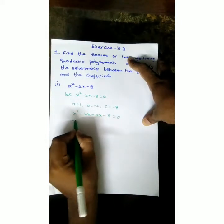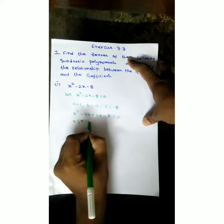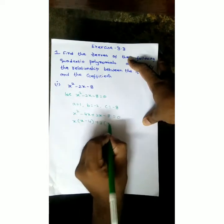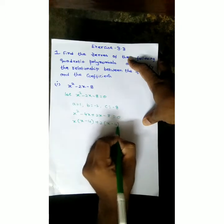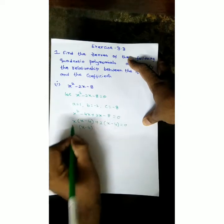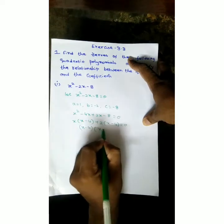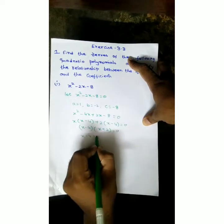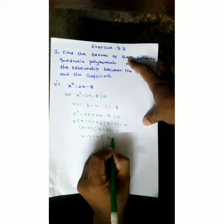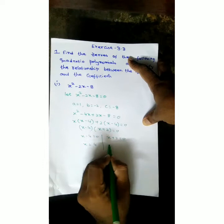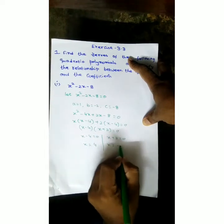Now from the first two terms take x common. x minus 4. From the last two take 2 common. 2 into x, 2x, 2 times 4 is 8. So x minus 4 is common. We get x minus 4 times x plus 2 equal to 0. So x minus 4 equal to 0, or x plus 2 equal to 0. Transposing minus 4 gives plus 4. Transposing plus 2 gives minus 2.